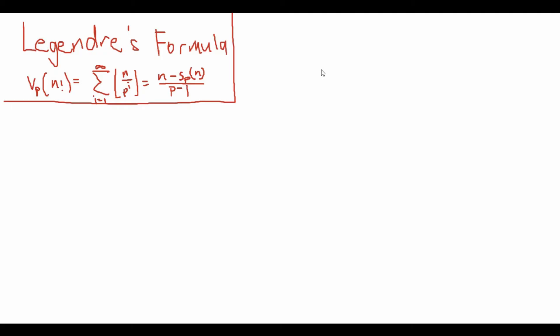Hi guys, it's Daniel here, and today we're going to make a quick video on how to prove Legendre's formula, which is the following: vp of n factorial is equal to the sum from i equals 1 to infinity of the floor of n over p to the power of i.